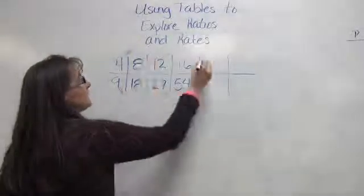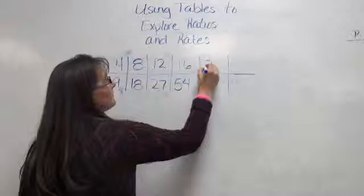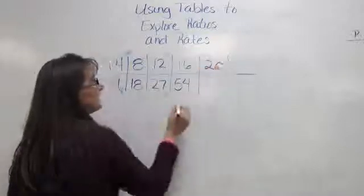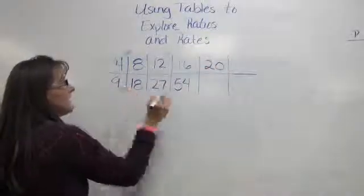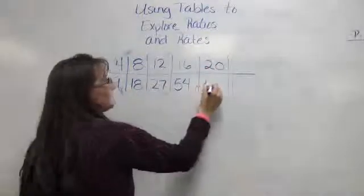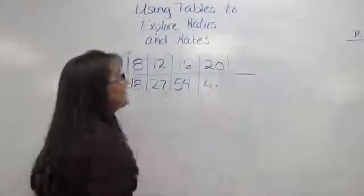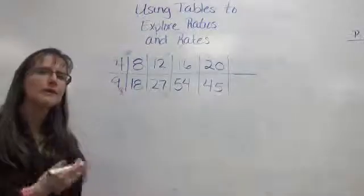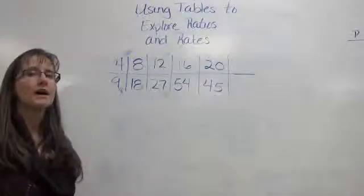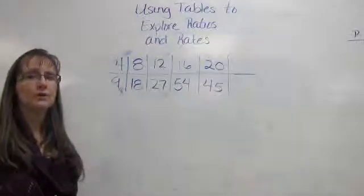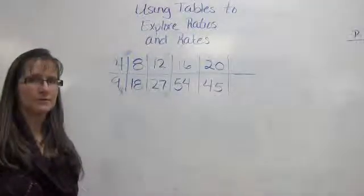Let's do one more. Let's take 4 times 5 — that gives us 20. And 9 times 5 gives us 45. We've created a table of equal ratios.